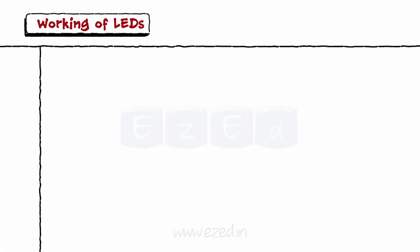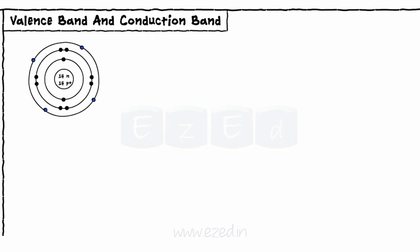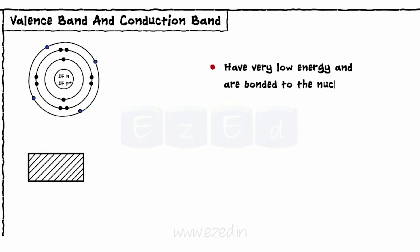Before moving towards the working of LEDs, we will learn about the valence band and the conduction band. In normal conditions, when electrons revolve around the nucleus in circular orbits, they have very low energy and are bonded to the nucleus only. These electrons reside in the lowest energy band known as the valence band.